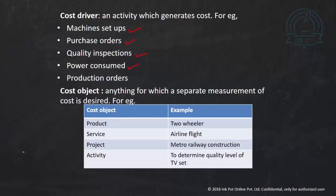Next is cost object. A cost object is an item for which cost is compiled or accumulated. For example, if we are calculating the total cost of a product like a TV set, the cost object is a product. If we are calculating the cost of an airline flight, the cost object is a service. It can also be a project like metro railway construction, or an activity.